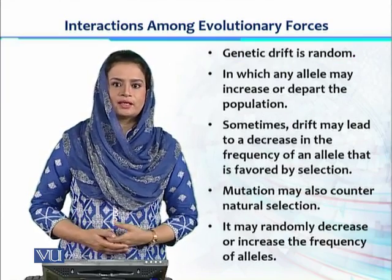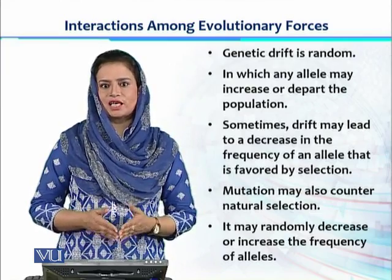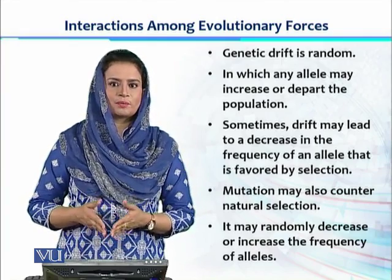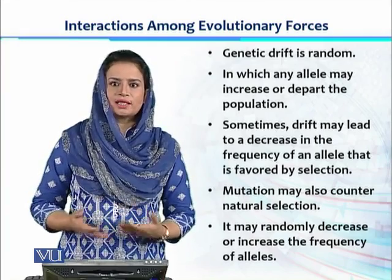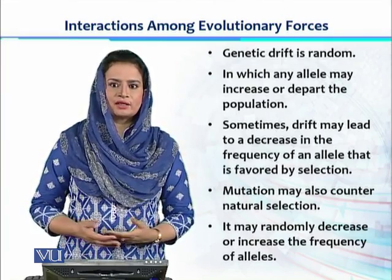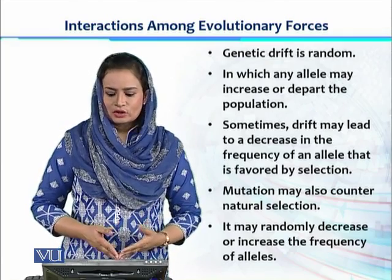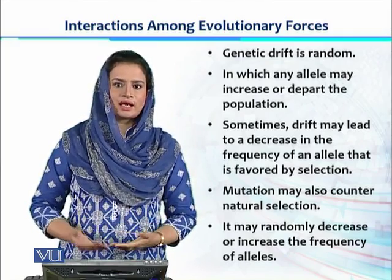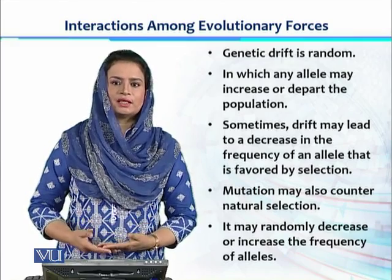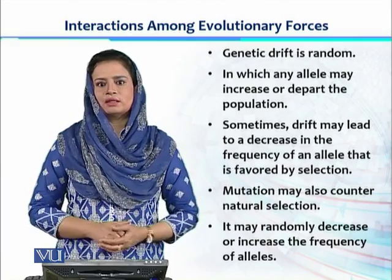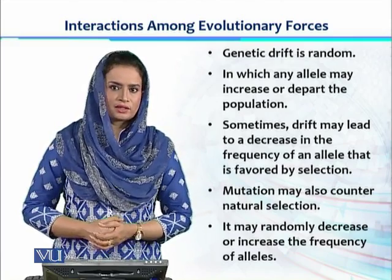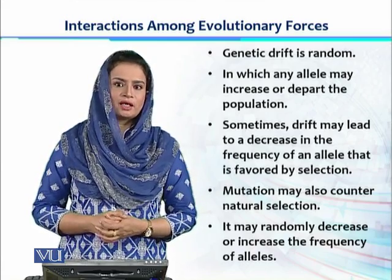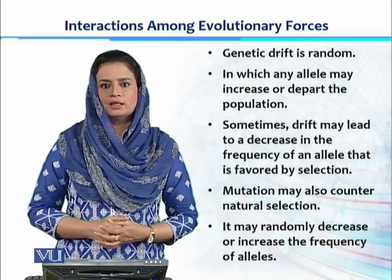But genetic drift is random. It won't select specific types of alleles the way natural selection does — which favors alleles that increase the reproductive capacity of the animal. Genetic drift doesn't have any bias to select certain alleles. As a result of genetic drift, there might be an increase in the frequency of inferior alleles and a decrease in the frequency of superior or favorable alleles. That's how genetic drift may remove those alleles which are favored by natural selection.